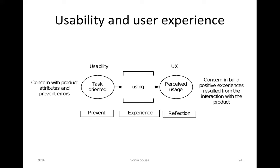Looking at the schema showing where usability and UX sit, usability concerns product attributes and preventing errors — it is task-oriented, focused on how to prevent something from not working or making it more efficient and satisfactory. User experience is something you measure after or before using a product, but mainly after. You are concerned with building positive experiences resulting from the interaction, focusing on reflection and using methods that provide that feedback.